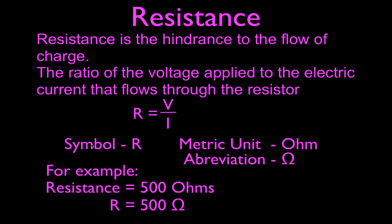The symbol for resistance is R. The metric unit for resistance is the Ohm, and the abbreviation for that is the Greek letter Omega. So that's R, Ohm, and Omega. When we write that down, we write that the resistance is equal to 500 Ohms, or R equals 500 Ω, and you still read that as: resistance is equal to 500 Ohms.